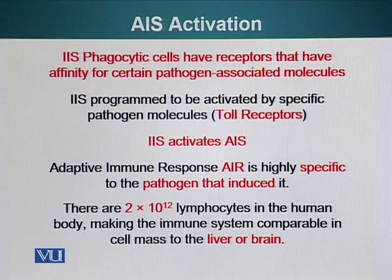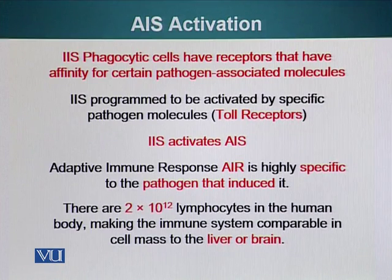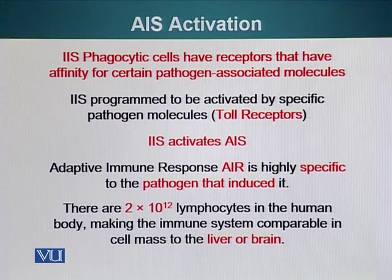When innate immune cells are activated — which also include, for example, the dendritic cells, which are also part of the innate immune system — when they are activated, they can activate the adaptive immune system. The adaptive immune response is very, very specific, versus the innate immune response which gets activated by any type of pathogen. There are about 2 to the power of 12 lymphocytes in the human body, roughly equal to the number of cells in the liver or brain — that is how large our immune system is, with the sole purpose of defending us against pathogens.